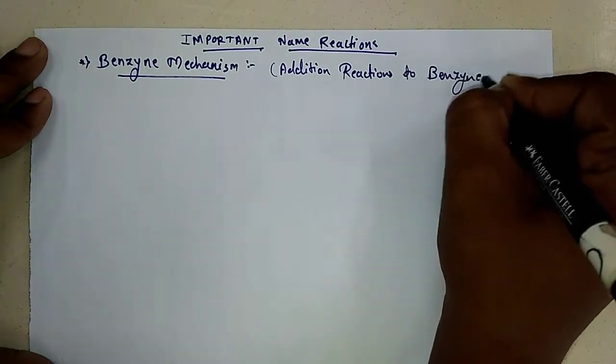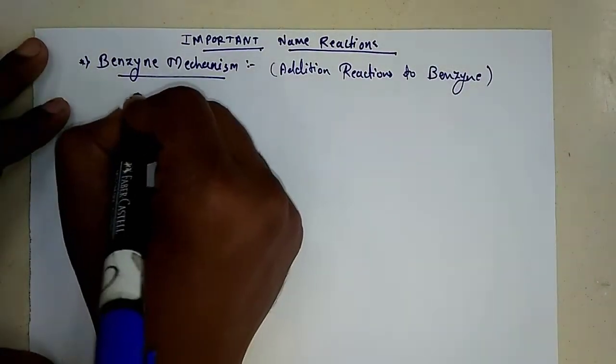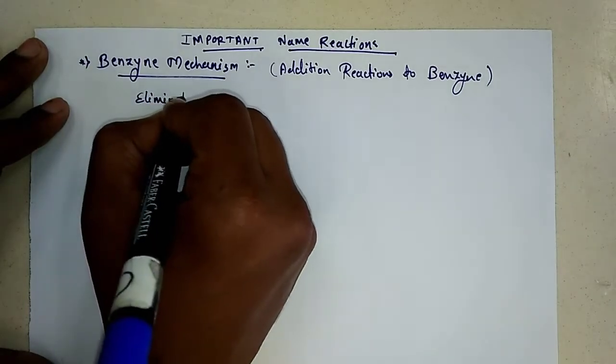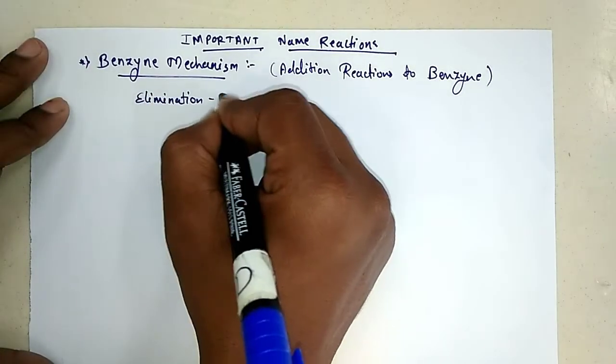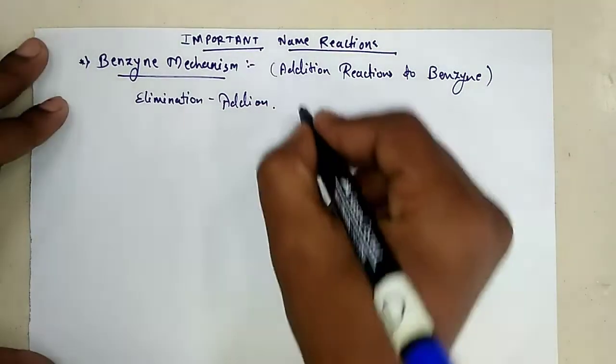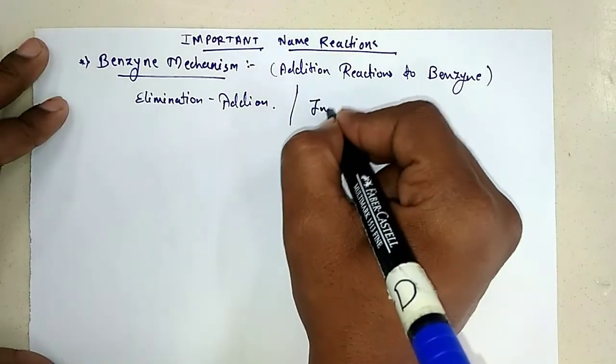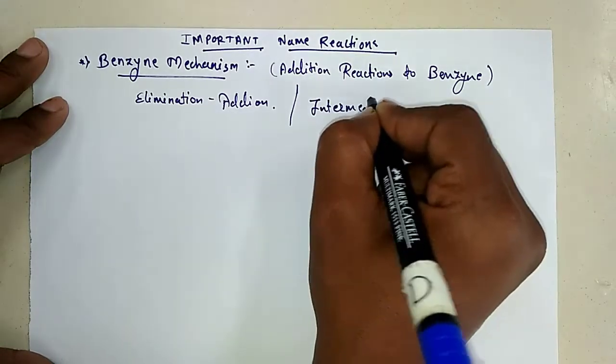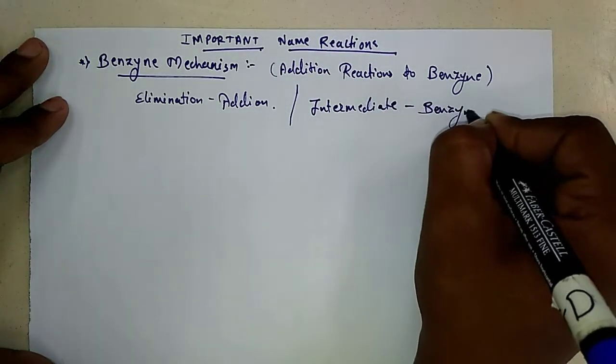Actually, in this reaction there are two types of consequent reactions. Elimination reaction is followed by the addition reaction. When our substrate undergoes elimination reaction, the intermediate formed is nothing but the benzyne.